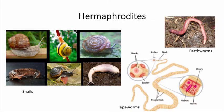Examples of hermaphrodites are snails, earthworms, and tapeworms. These are usually organisms that don't move very fast, so they have few chances of running into another organism of the same species. Finding not only another organism of the same species but also the opposite sex would be very difficult. But if they're hermaphrodites, every time they encounter an organism from the same species they're able to mate, which makes it very efficient.